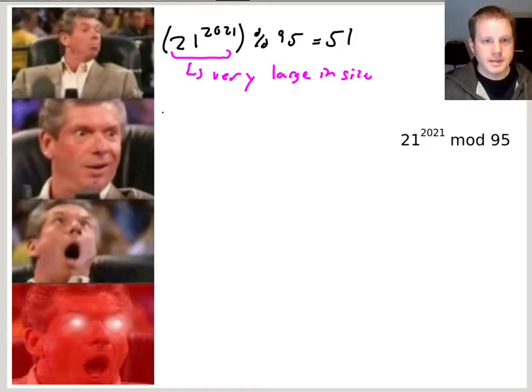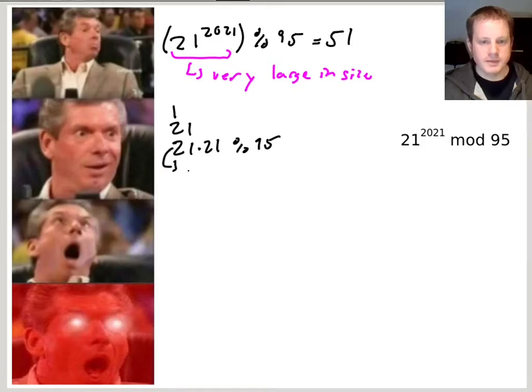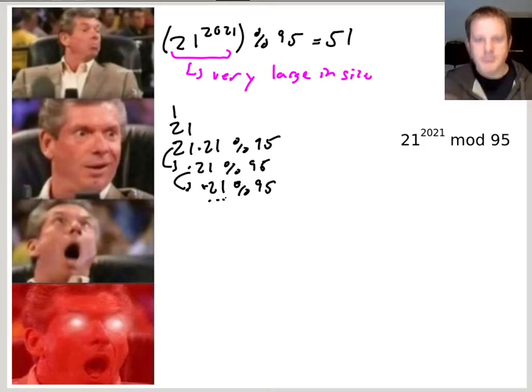So the second idea is to just start with 1, then 21, and then 21 times 21, but take it mod 95. And then this value times 21 mod 95, and then this value times 21 mod 95, and just keep doing that 2,000 times. So we're just going to keep multiplying by 21 and then take mod 95 immediately.